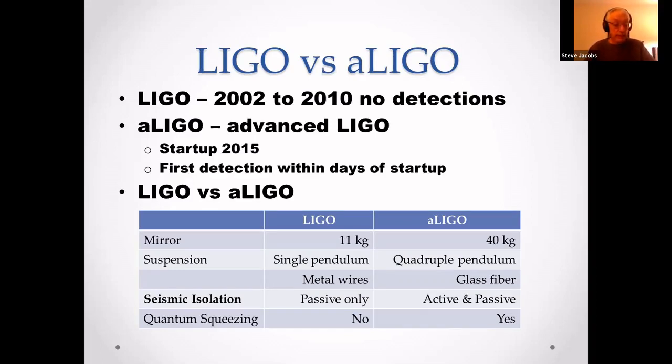Advanced LIGO has added active seismic isolation, and advanced LIGO also has a quantum squeezer.